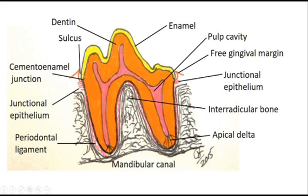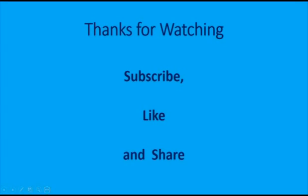Here is a two-rooted tooth — dogs and cats have several of these, and they also have three-rooted teeth. The anatomy is basically the same as the one-rooted tooth, except there is bone between the joined roots, and this is called the interradicular bone.